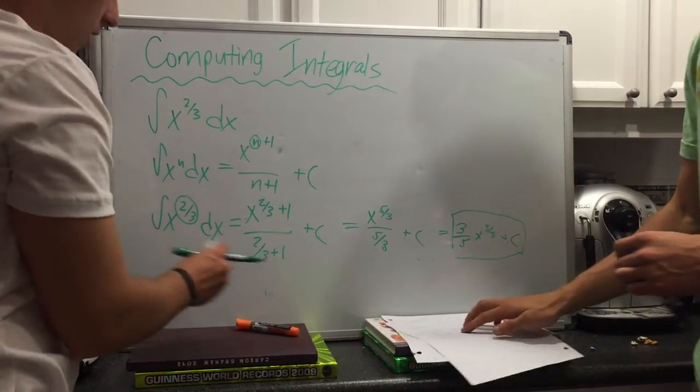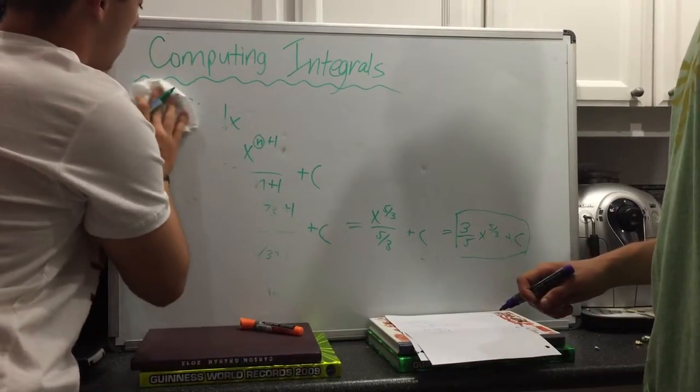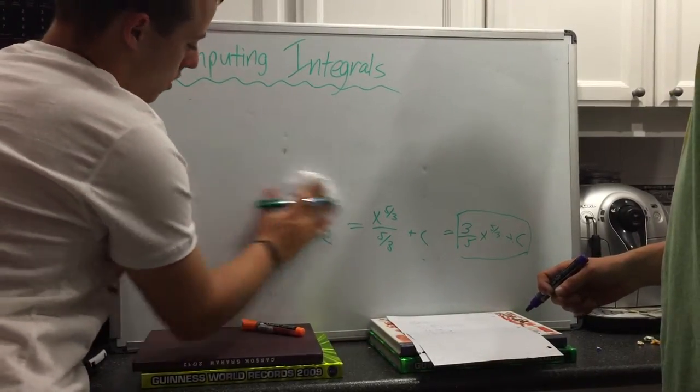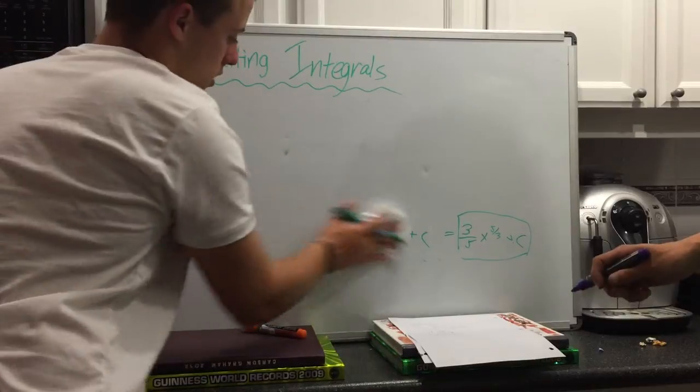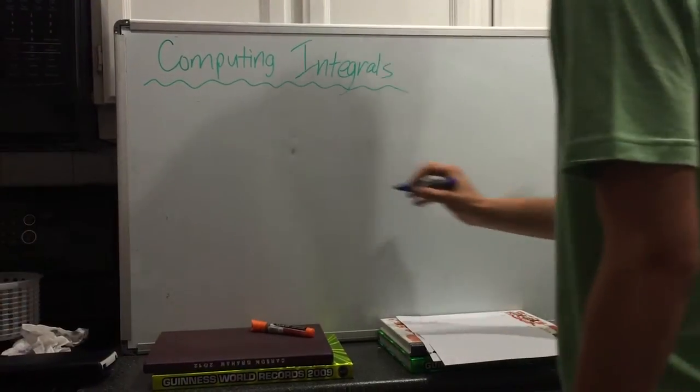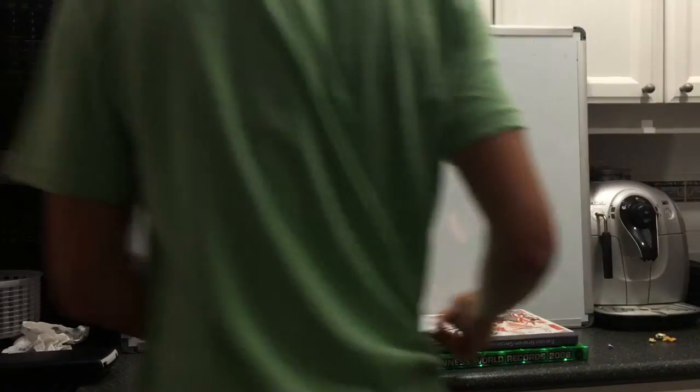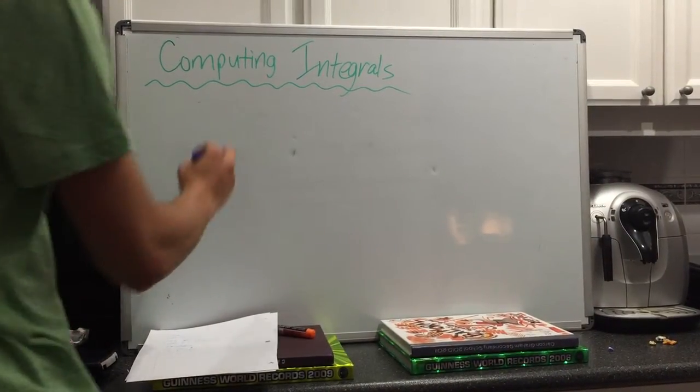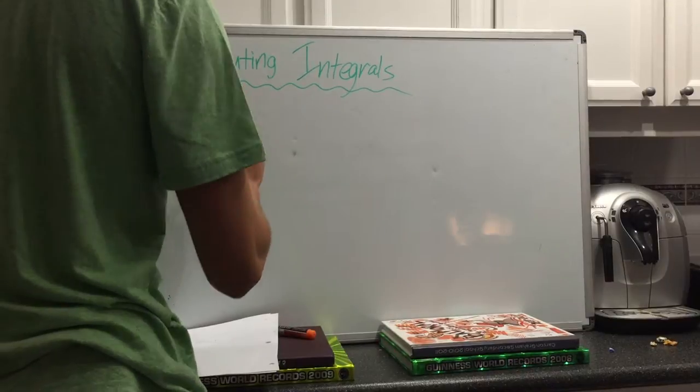Our second problem is going to be a simple foiling and then the integral of a trinomial. We start with the integral of 2 binomials.